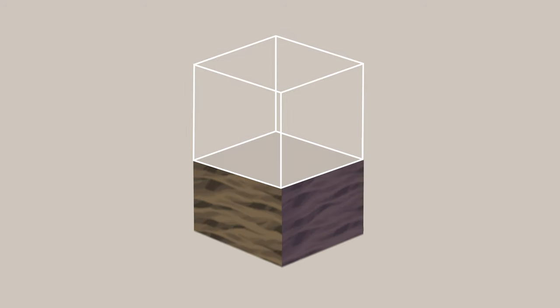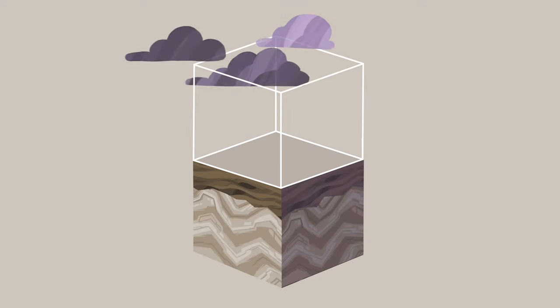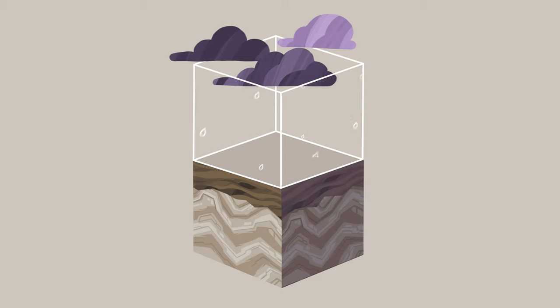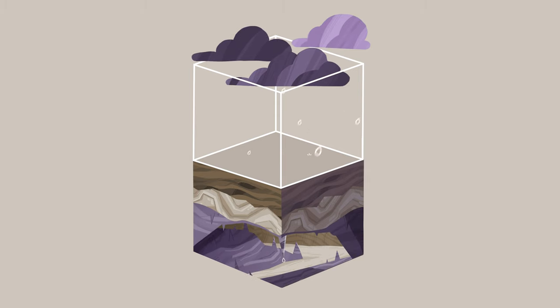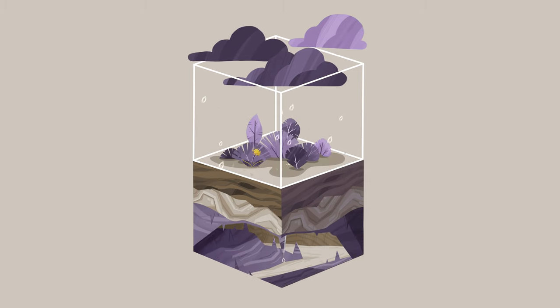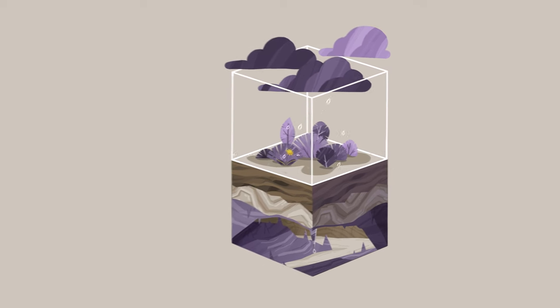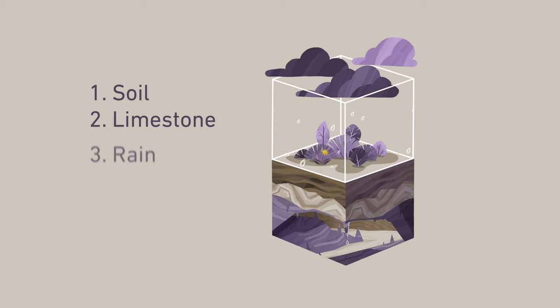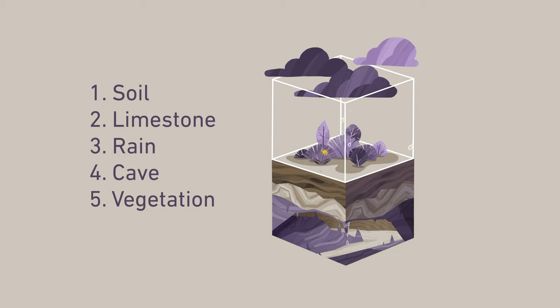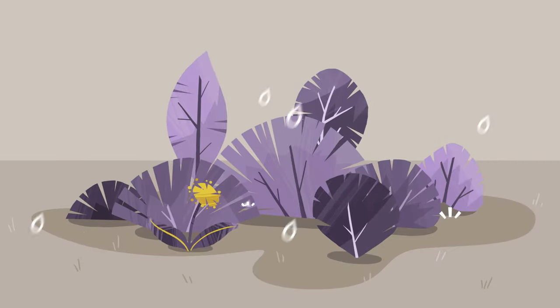For a stalagmite to form, generally three things are needed: soil, a limestone bedrock, and rainwater. Oh, and a cave beneath the limestone bedrock, and typically also vegetation growing on the soil. So, if those five conditions are provided, a stalagmite can form. This is how it works.